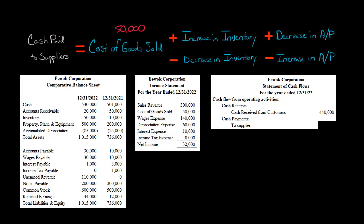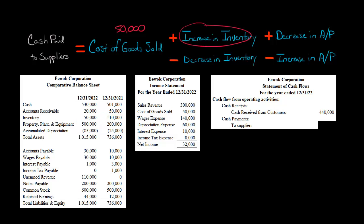Next up, we need to look at a comparative balance sheet. We need to see this year's balance sheet and last year's balance sheet to see what was the change in inventory over time. Inventory last year was $10,000, and this year was $50,000, so it went up. There was an increase in inventory of $40,000, so I'll write the $40,000 right here.